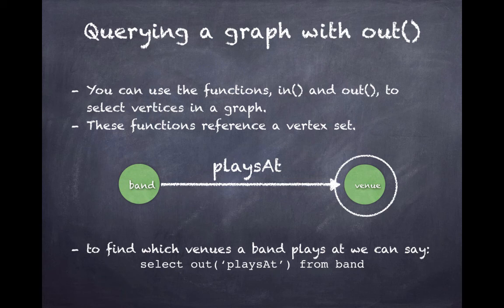The function OUT references a vertex set, so if we want to see which venues a band is playing at, we could say select OUT playsAt from band. Notice that the FROM clause is band, and we're selecting OUT of band along playsAt.